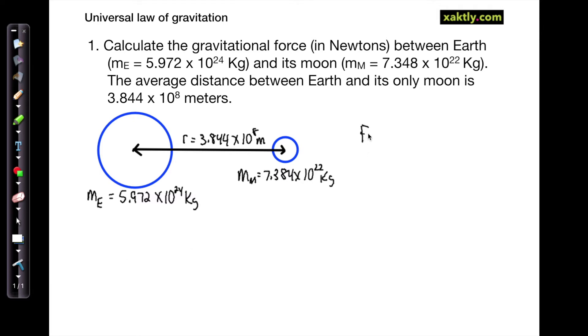Okay, so the universal law of gravitation is F equals G m1 m2 over r squared. G is the universal gravitational constant, that's 6.674 times 10 to the negative 11th, and the units are meters cubed per kilogram second squared. That's just to get the units right.